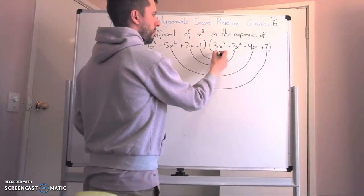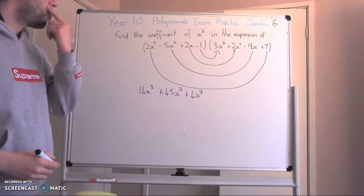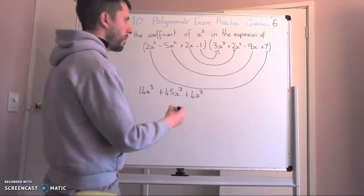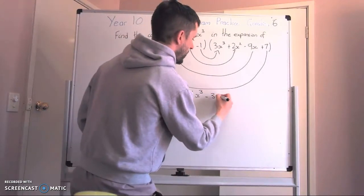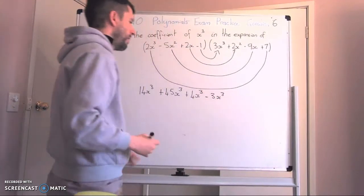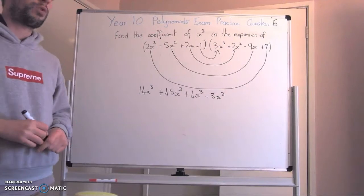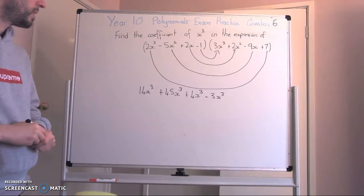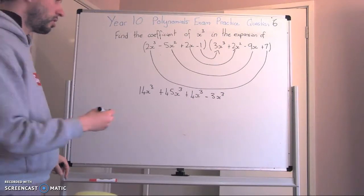Likewise here, -1 times 3x³ is just -3x³. So these are all of our power of 3's that we would have got, but I've just done it in a simpler way. Now we can just solve it.